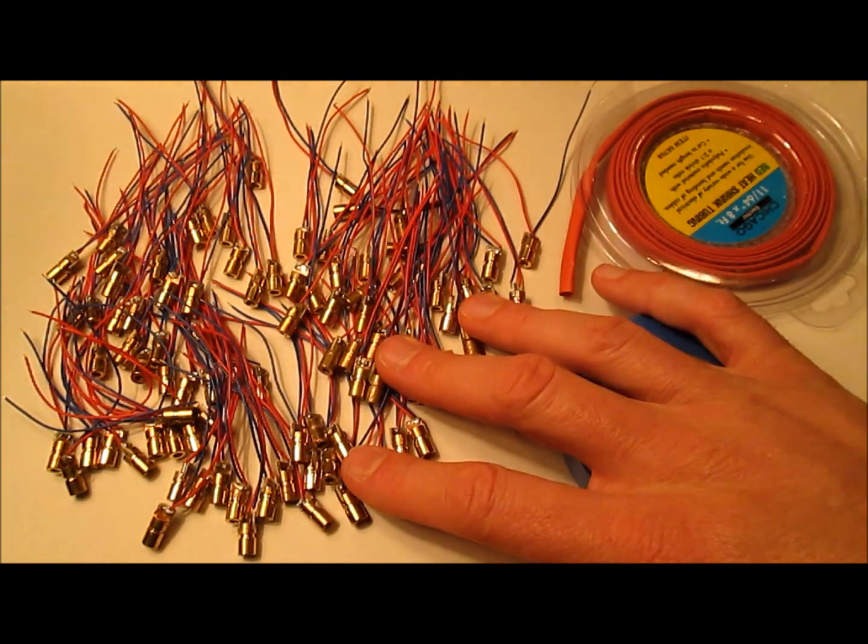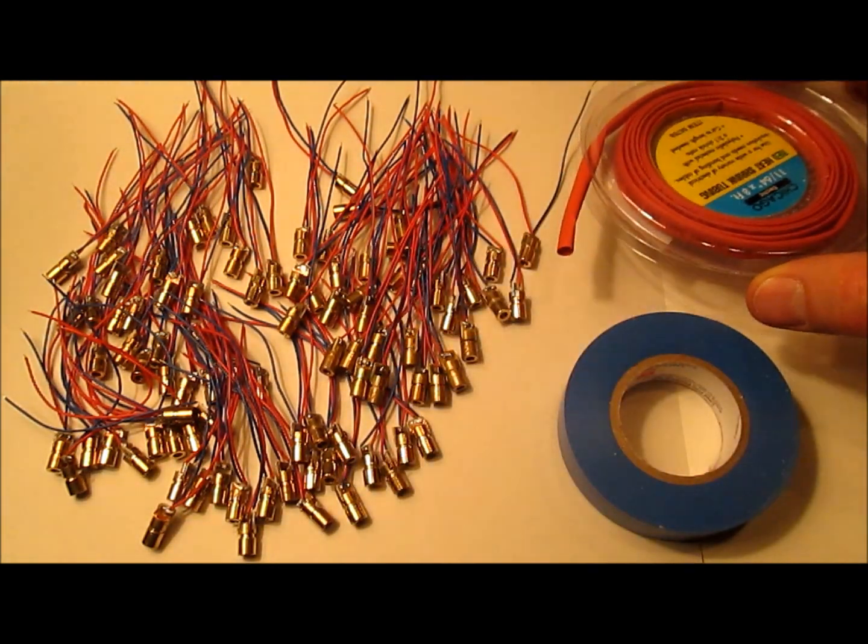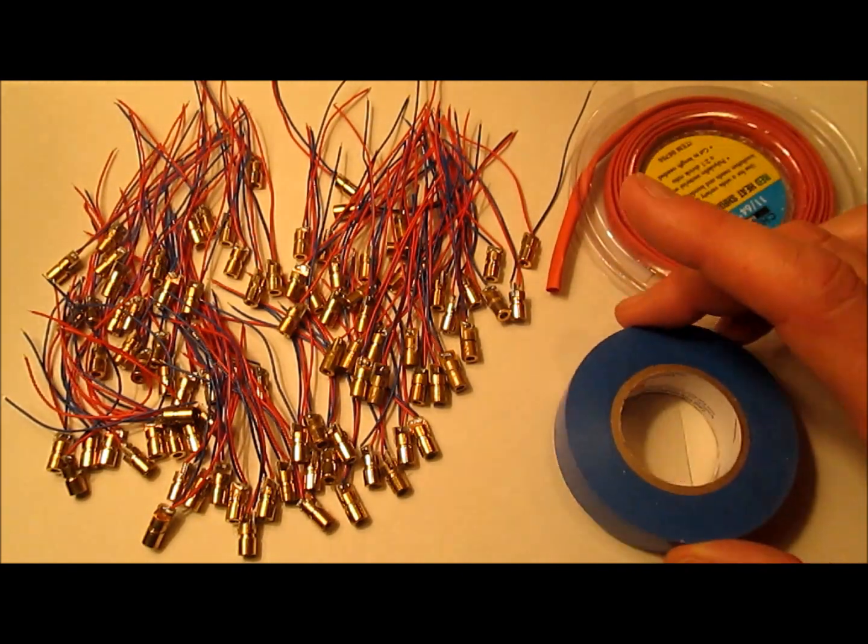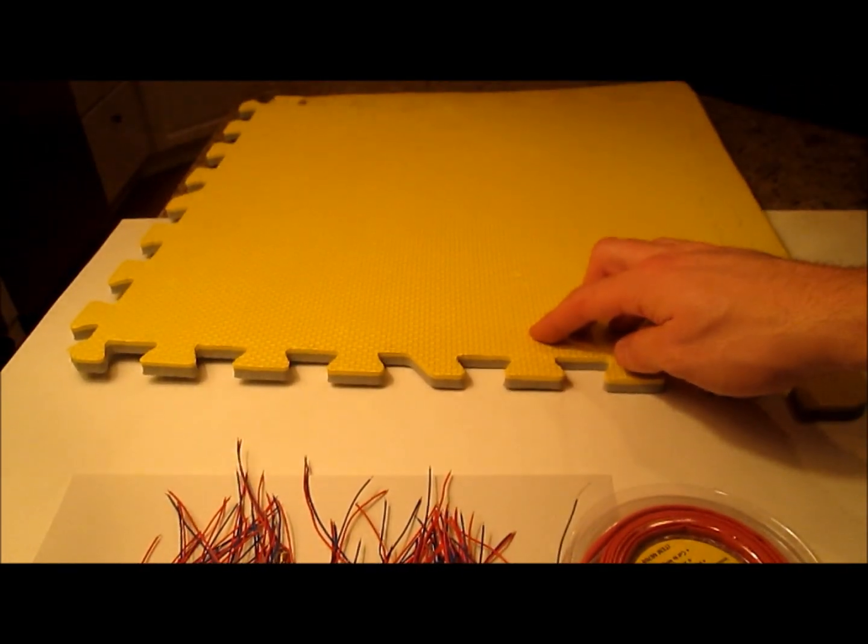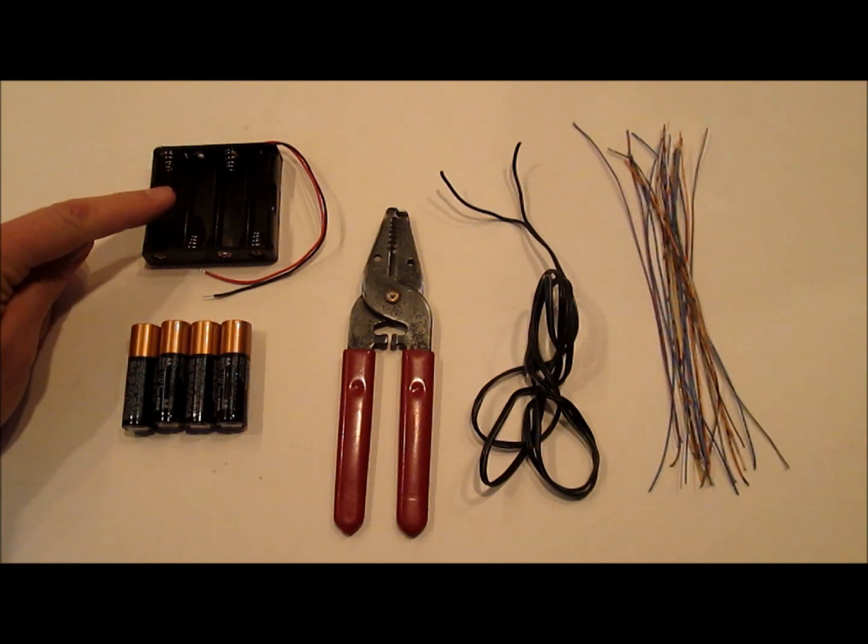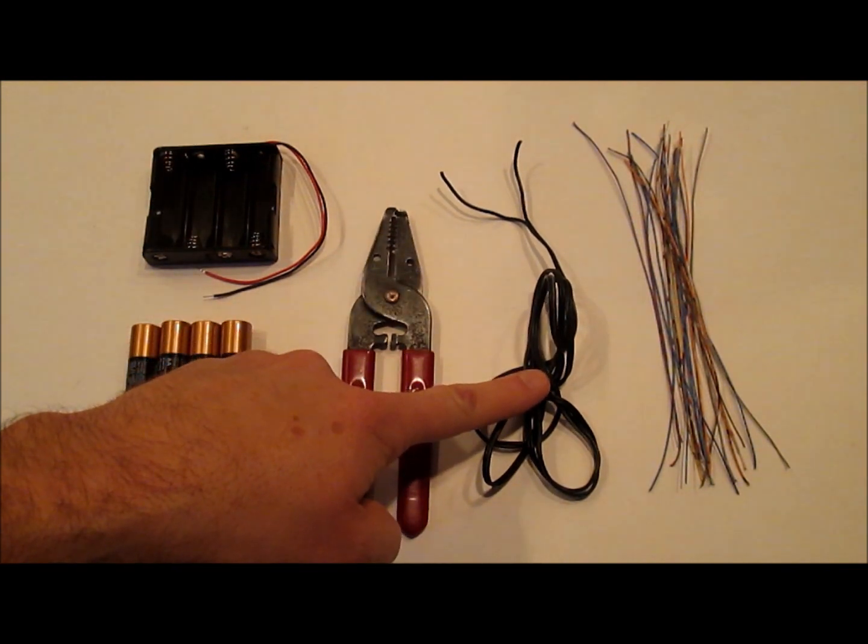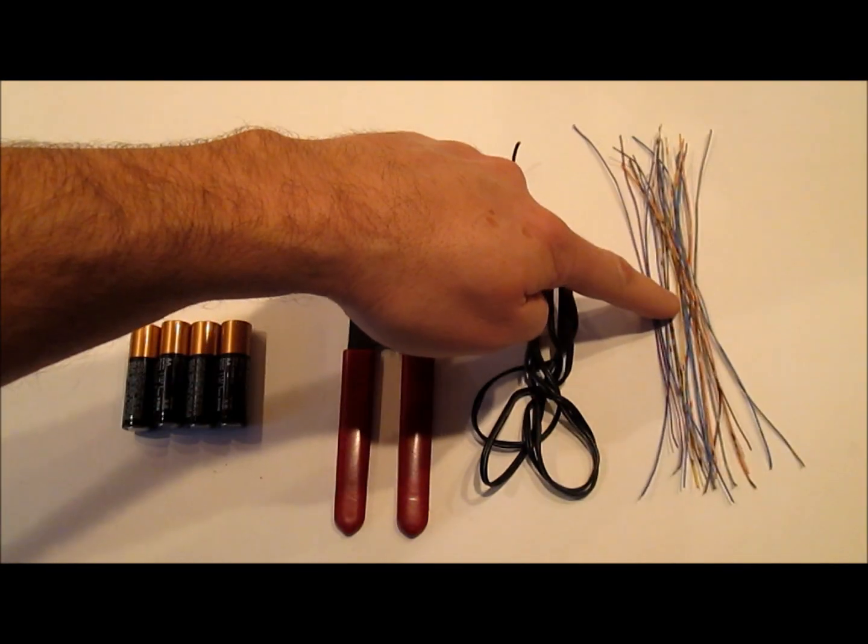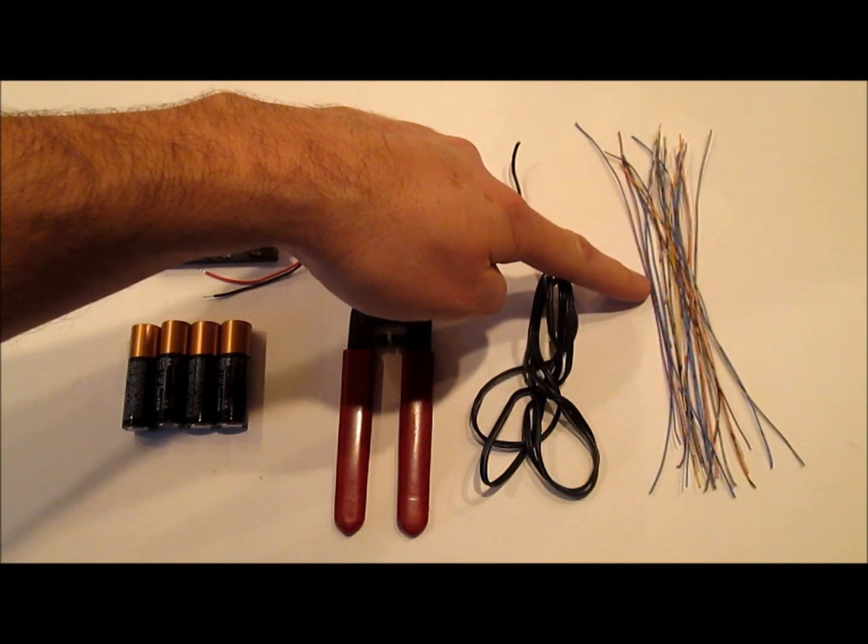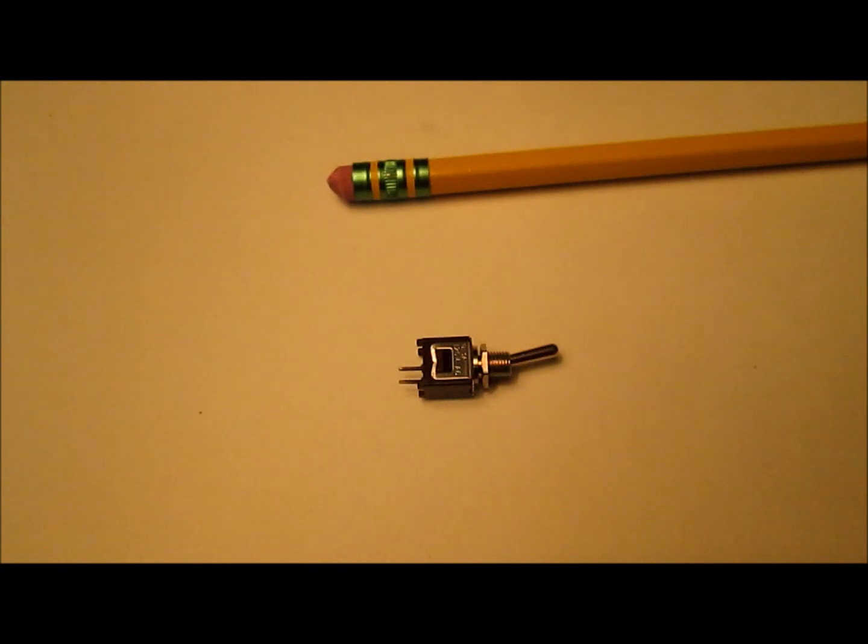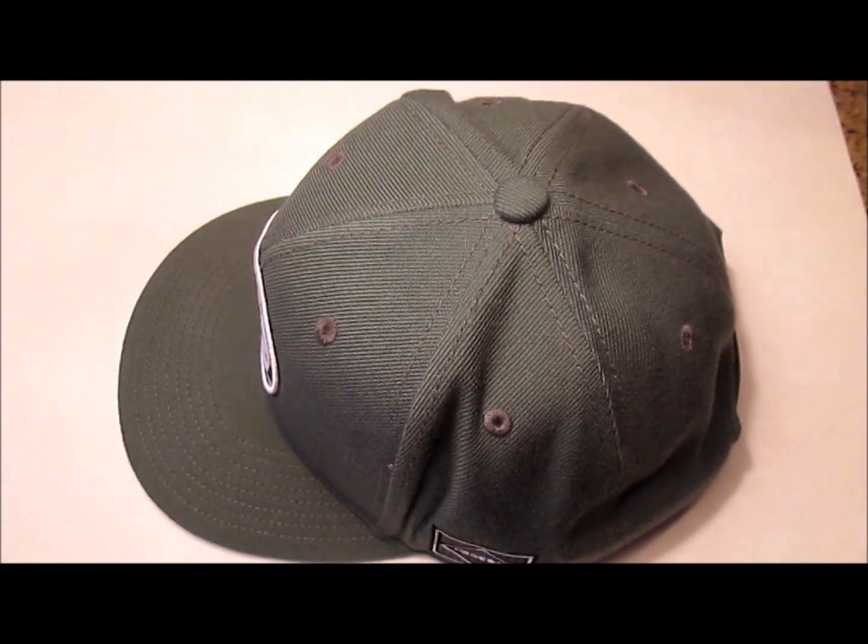For parts we'll need 100 laser diodes, some heat shrink tubing or electrical tape, and a piece of foam to mount the diodes in, 4 AA batteries, a AA battery holder, wire strippers, 3 to 4 feet of twin lead copper wire, and some copper wire pieces such as out of a Cat5 cable, a tiny on-off switch, some double stick tape, and a baseball cap.